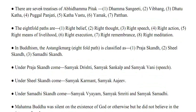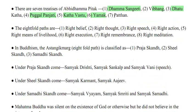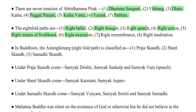There are seven titles of Abidham Pitaka: Dham Sangeet, Vibhang, Dhatu, Katha, Pugal Panjati, Katha Vastu, Yamak and Pathan. The eightfold paths are: right belief, right thought, right speech, right action, right means of livelihood, right execution, right remembrance, and right meditation.